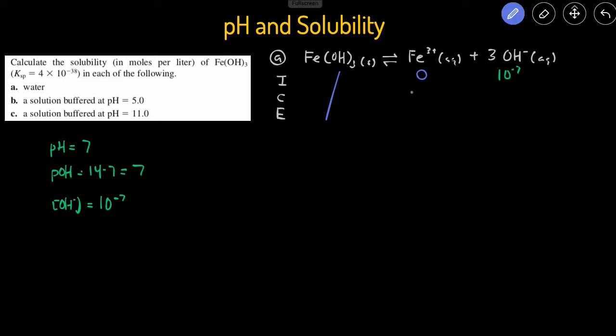Then we complete the rest of the ICE table. This is going to be plus x because it's a product. And this is going to be plus 3x because there's a coefficient of 3 here. And then this will be x, and this will be 10 to the negative 7 plus 3x.